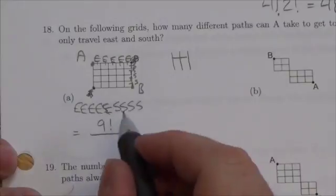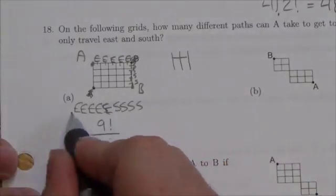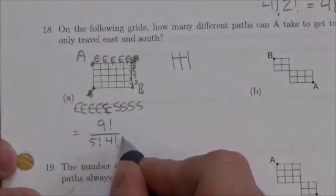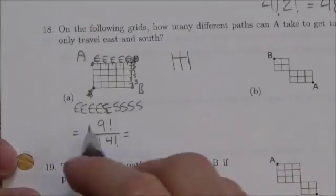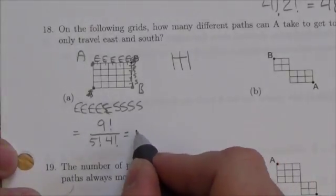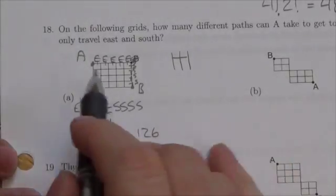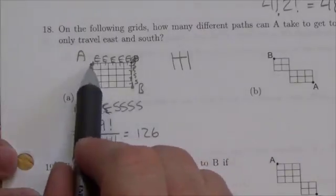Well, it's 9! if you treat them all as if they're different. And then we're going to divide by the repetition of the E's and the repetition of the S's. When we go to our calculator and plug that all in, we'll get that there's 126 unique pathways that take you from A to B.